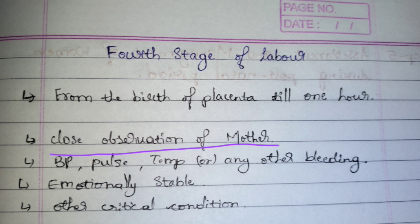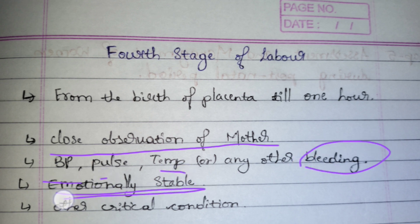We will check vital signs frequently — BP, pulse, temperature — and mainly the bleeding, and whether she is emotionally stable or not. We will be checking if she is feeling anxiety or is mentally affected. We will continuously examine her to find if any critical condition is present, for example if there is any kind of hemorrhage in the uterus.